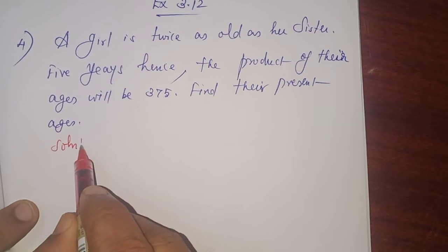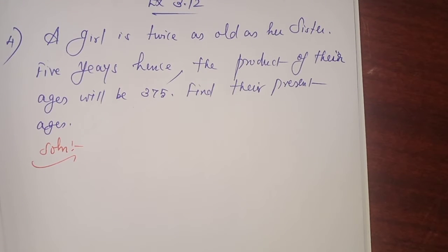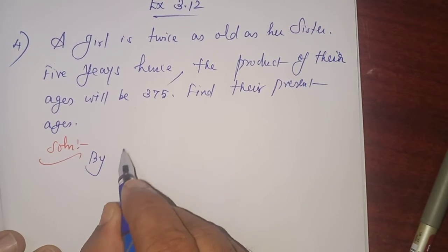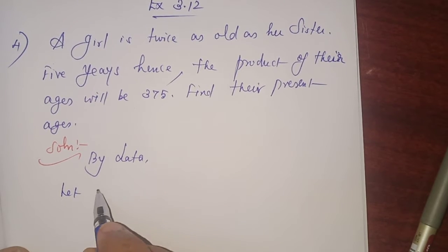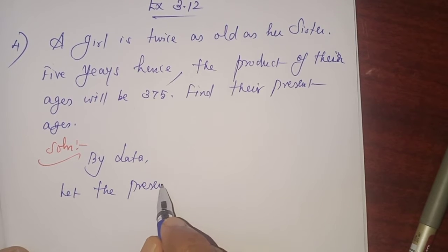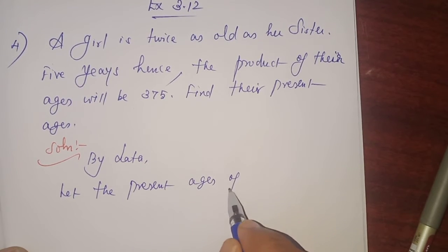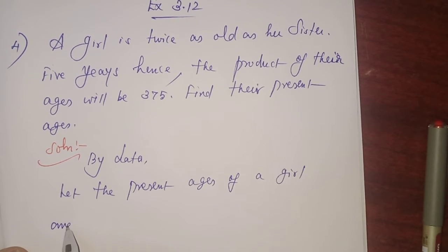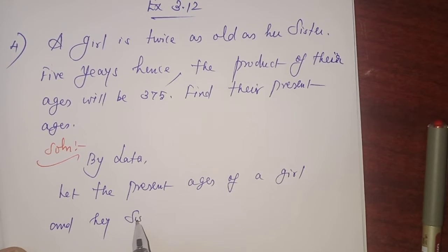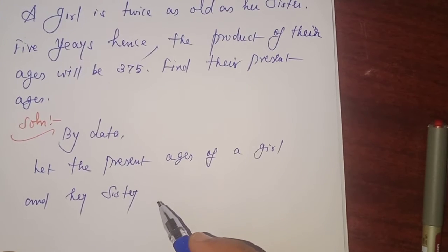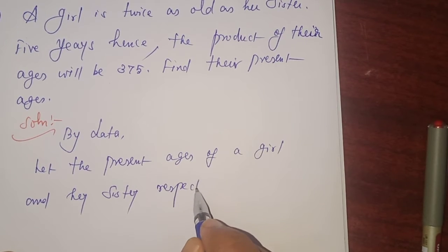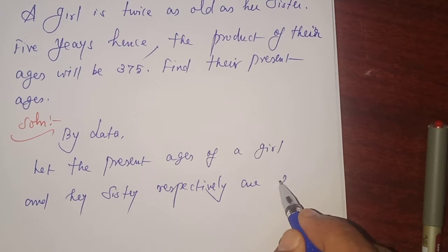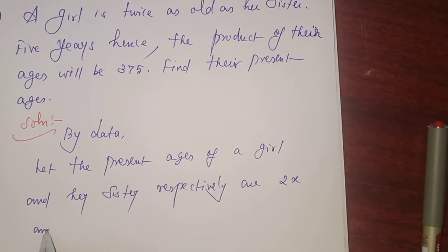Solution. By data, let the present ages of a girl and her sister respectively are 2x and x.